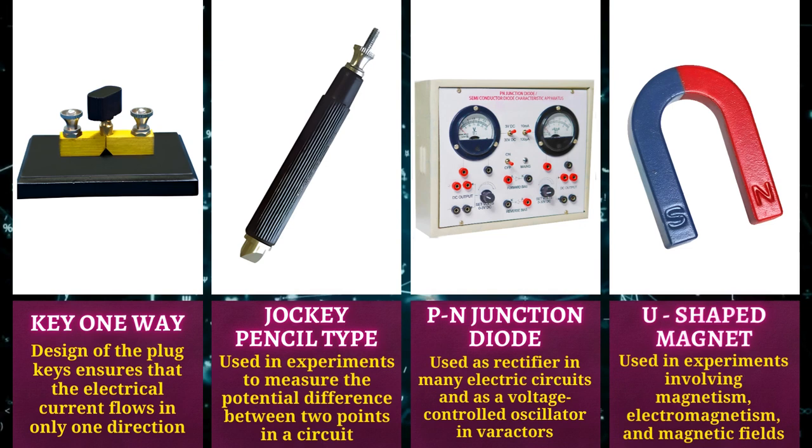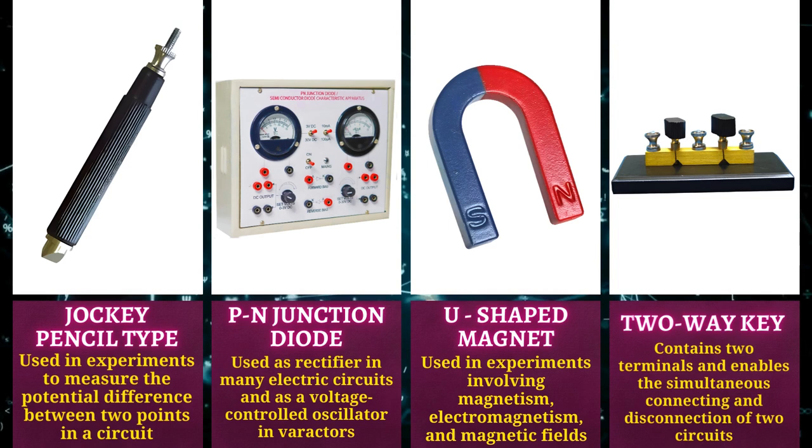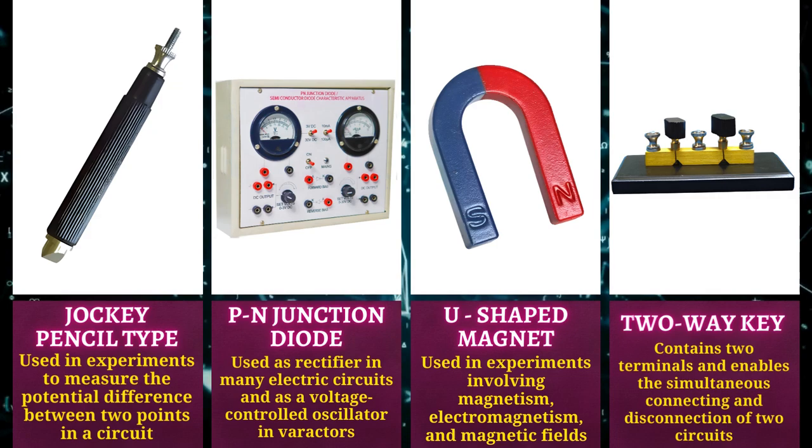U-shaped magnets are used in experiments involving magnetism, electromagnetism, and magnetic fields. Two-way key contains two terminals and enables the simultaneous connecting and disconnection of two circuits.